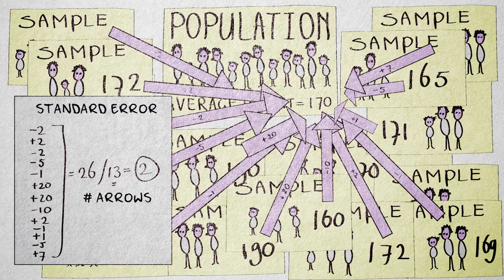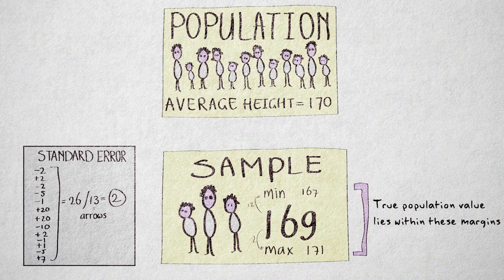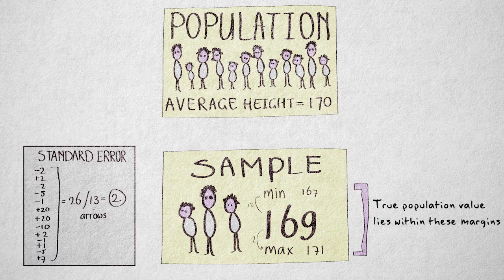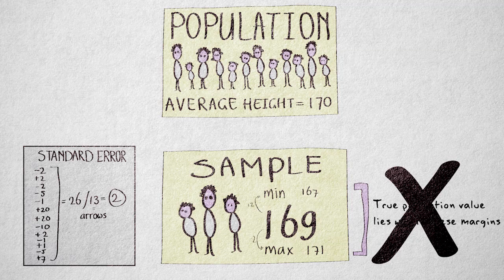We can then use the standard error to calculate a margin of error. You might think the margin of error tells us by how much our sample differs from the population at most. But we can't calculate between what boundaries the true population value lies exactly, because we're estimating the sampling error in the long run over repeated samplings.